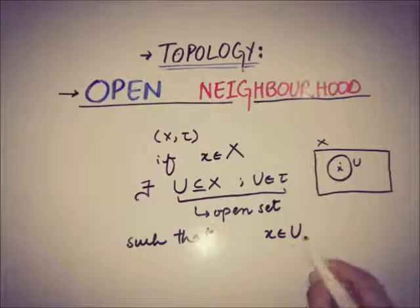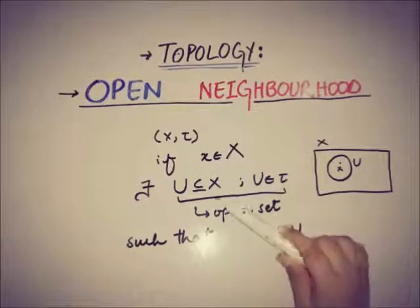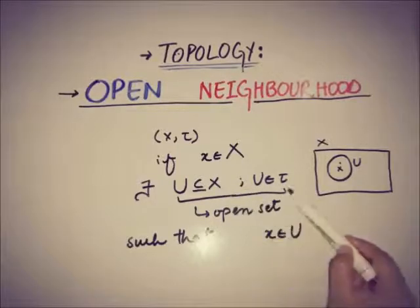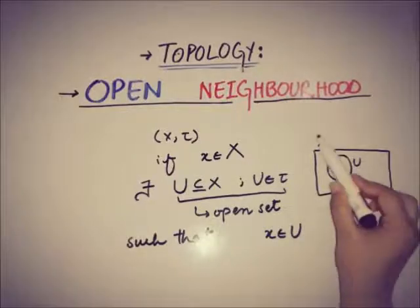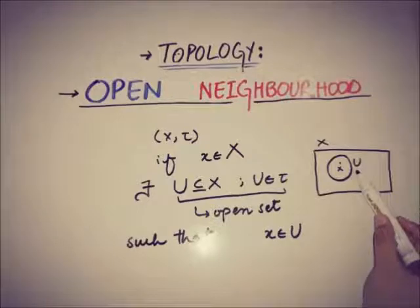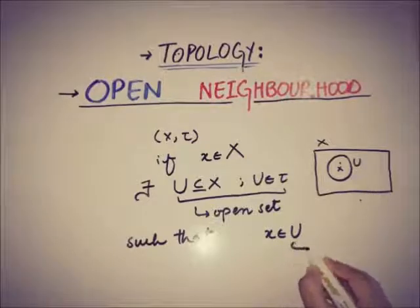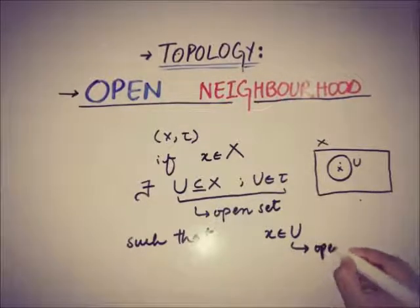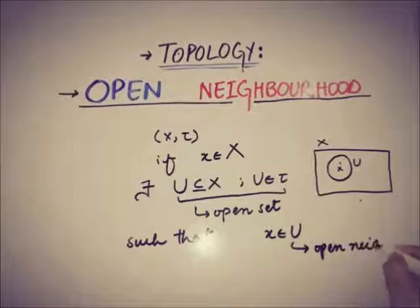So u is open because u is a subset of x and u is also a member of the topology. And u is called an open neighborhood because the point x in the set x is contained in that open set u — thus u is known as an open neighborhood of that point x.